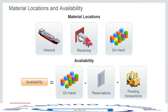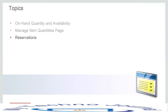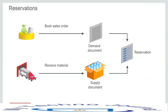We can use the manage item quantities user interface to view item availability. Before the demonstration on how to view item on-hand quantity, let's go through the next couple of slides on reservations. This section discusses reservations, their types, and reservation supply and demand types. A reservation is a link between a supply document and a demand document.